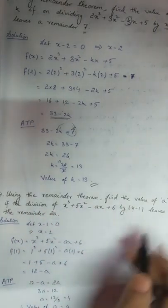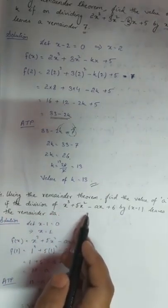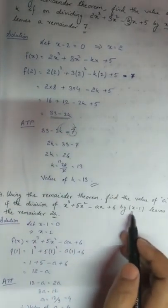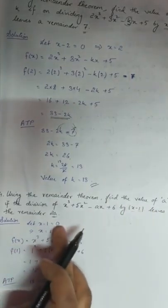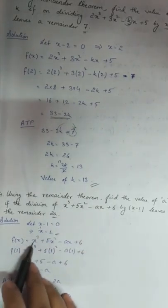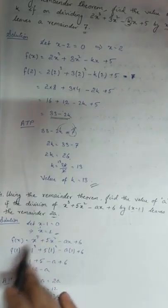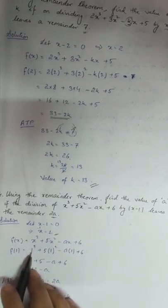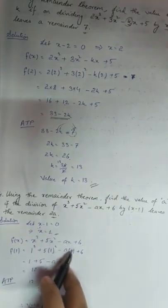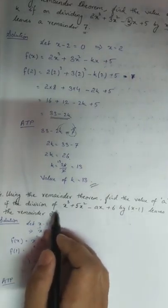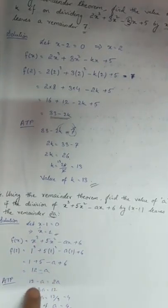Using the remainder theorem, find the value of a if the division of x³ + 5x² - ax + 6 by x - 1 leaves the remainder 2a. The divisor x - 1 = 0 gives x = 1. So f(1) = 1 + 5 - a + 6 = 12 - a. Since the remainder is 2a, we get 12 - a = 2a, and solving gives a = 4.